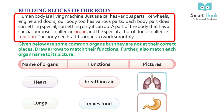The human body is a living machine. Just as a car has various parts like wheels, engine, and doors, our body too has many parts. Each body part does something special – something only it can do. A part of the body that has a special purpose is called an organ, and the special action it does is called its function.